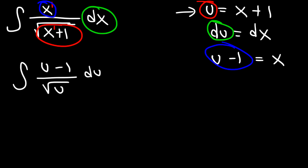Now at this point, what you need to do is separate it into two integrals. So let's divide u by the square root of u, and this will give us this integral, and let's divide negative 1 by the square root of u. So this is going to be minus integral of 1 over square root of u du.